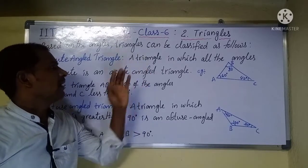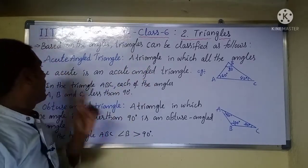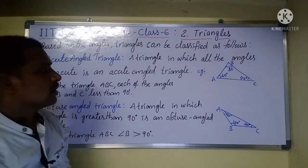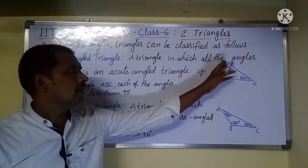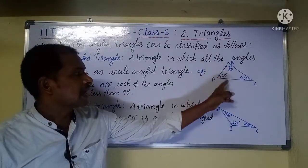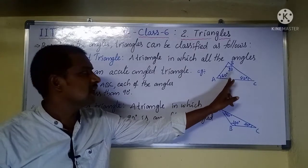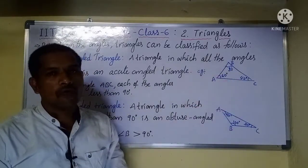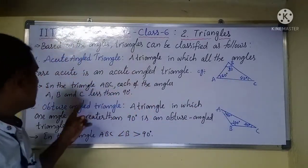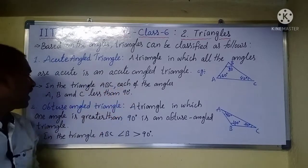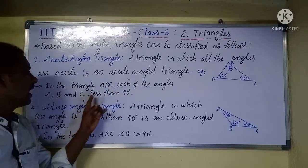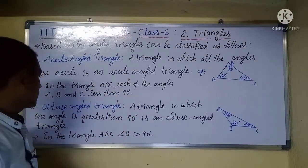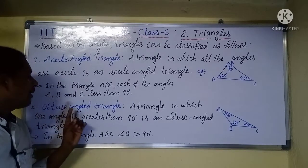An acute angle triangle is a triangle in which all the angles are acute. For example, in triangle ABC, angle A is 60 degrees, angle B is 80 degrees, and angle C is 40 degrees. Each of the angles A, B, and C is less than 90 degrees, so this is an acute angle triangle.